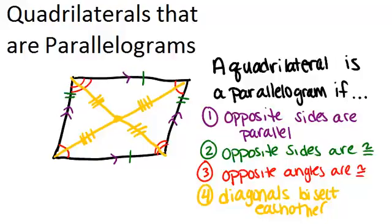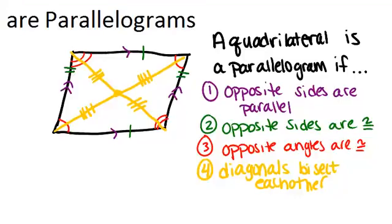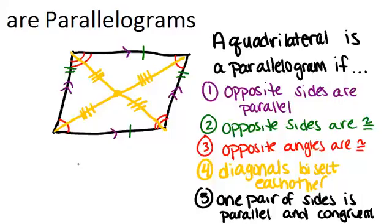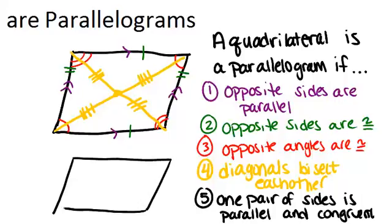The last way to tell if a quadrilateral is a parallelogram is actually a combination of the first two ways — if one pair of sides is both parallel and congruent. So if you don't know anything about both pairs of sides, but you're able to show that one pair of sides is parallel and the same length, then that shape has to be a parallelogram and satisfy all the other properties of parallelograms.